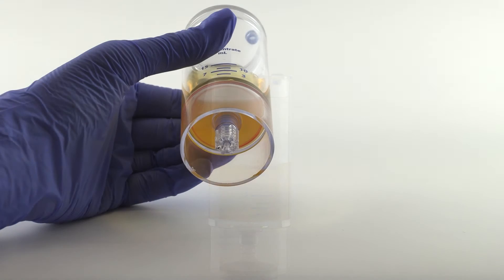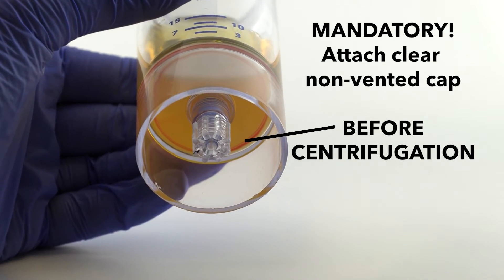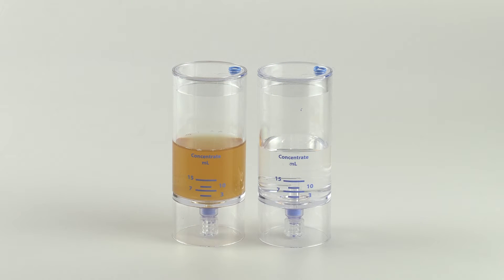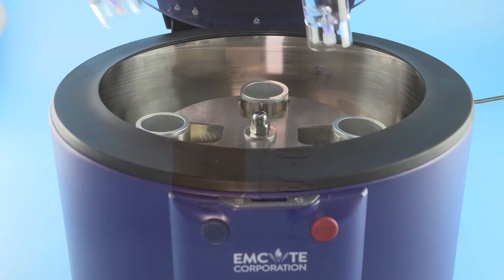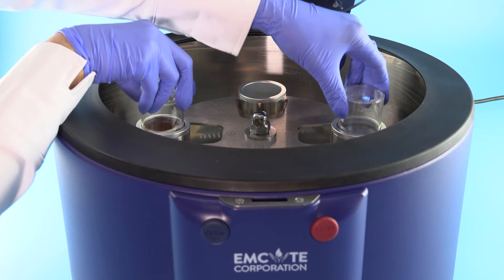As a mandatory step, always attach the clear non-vented cap to the bottom port prior to centrifugation. Counterbalance with equal volume. Be sure to always place the clear non-vented cap to the bottom port of the counterbalance device as well, and place back into the centrifuge rotor at opposite ends.